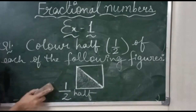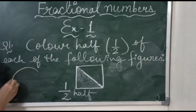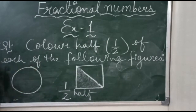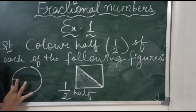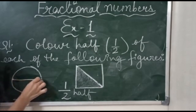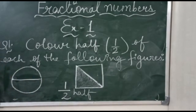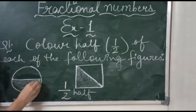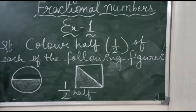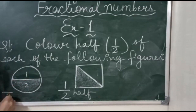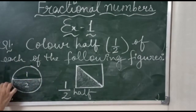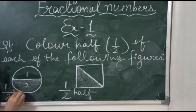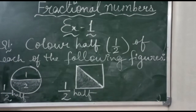The next figure is a circle, already divided into two equal parts. Same thing we will follow here — we will fill the half portion of the circle. One and two parts we will write on the Denominator. This is one circle, meaning it is the whole, which we write on the place of Numerator. This is called half.